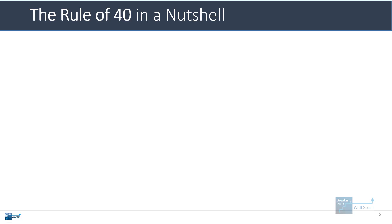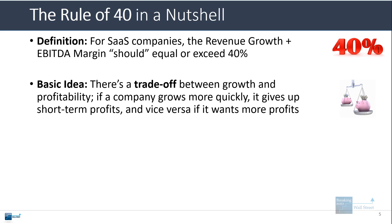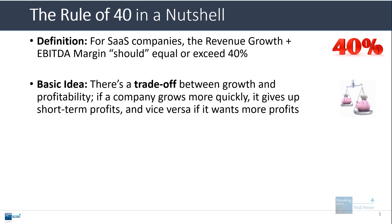In a nutshell, the rule of 40 states that for a software as a service company, its revenue growth plus EBITDA margin should equal or exceed 40%. The basic idea is that there's always a trade-off between growth and profitability. If a company wants to grow more quickly, it's going to have to give up some short-term profits because it will have to spend more on sales and marketing. But if a company wants to become more profitable, it can do so, but it's going to have to give up some of that growth, and so its profits will go up but it will not be reaching as many new customers anymore.